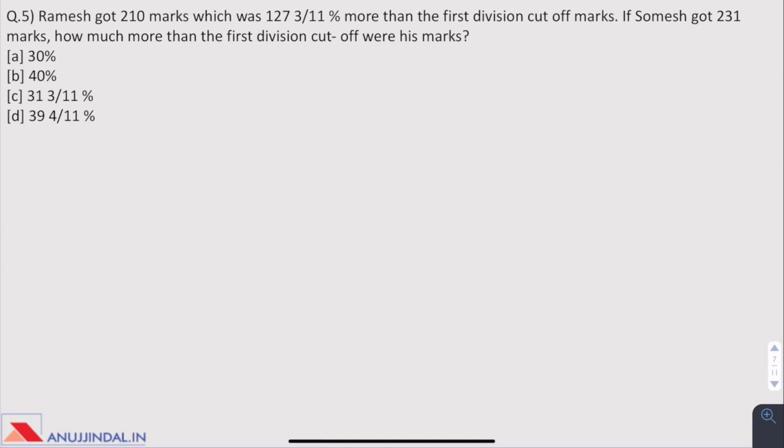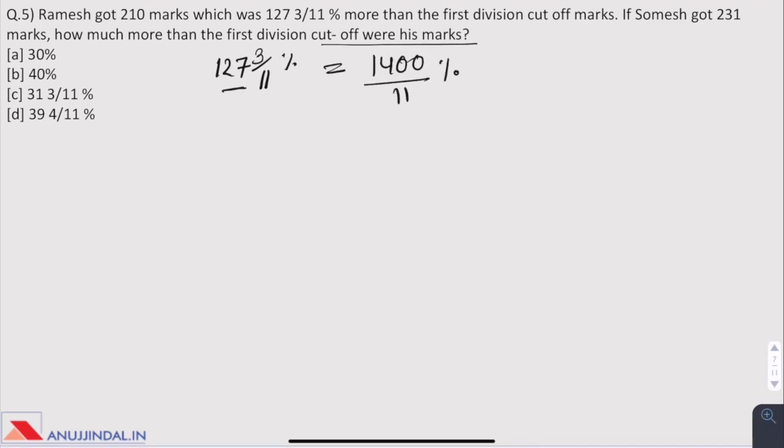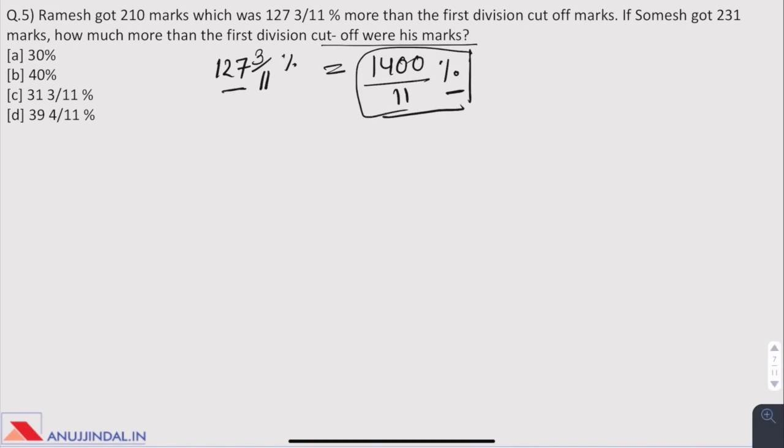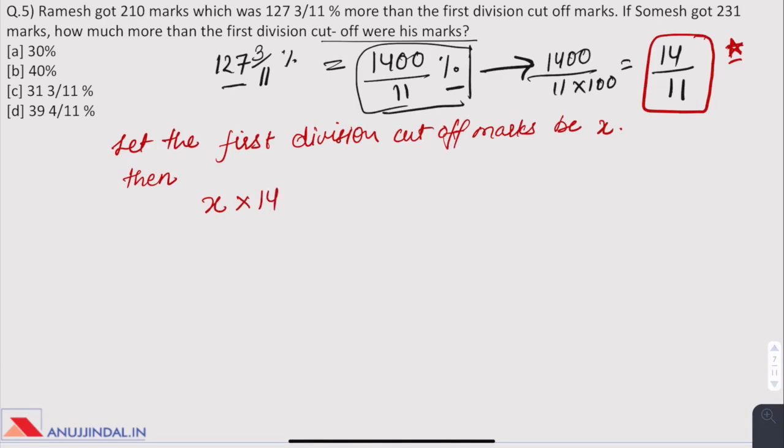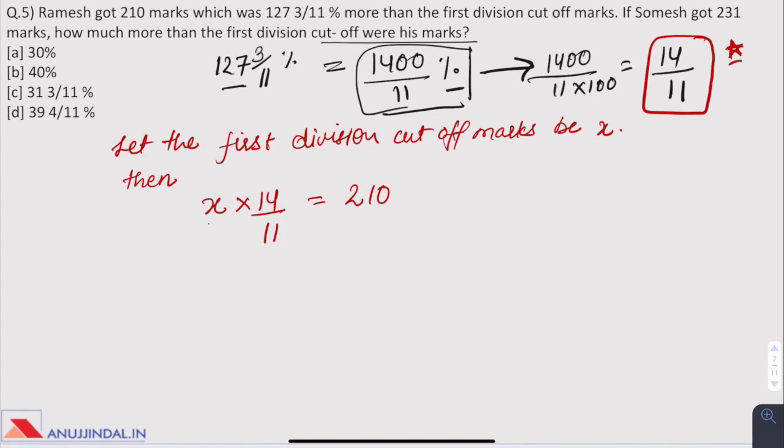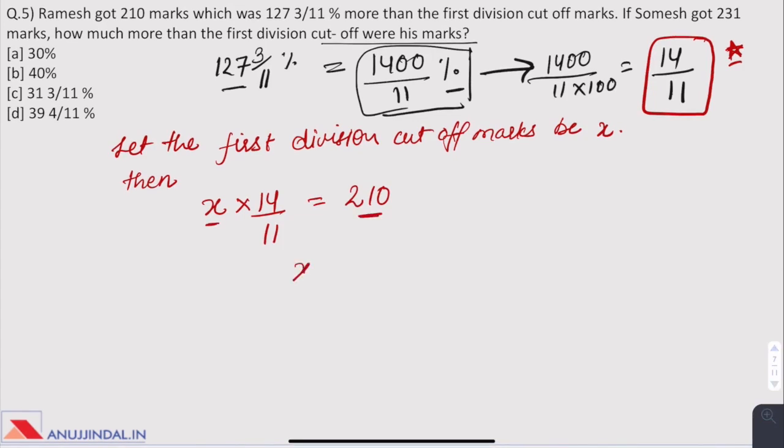Question 5. Ramesh got 210 marks which was 127 3/11 percent more than the first division cutoff marks. If Somesh got 231 marks how much more than the first division cutoff were his marks? First we see that 127 3/11 percent can be written as 1400/11 percent. Converting to fraction by dividing by 100, we get 14/11. So whatever marks Ramesh got, it was 14/11 times of first division cutoff. Let the cutoff be x, then 14/11 times x equals 210. So x equals 165 marks.